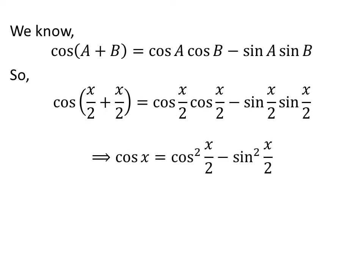Half of x plus half of x is equal to x, so cosine of x is equal to the square of cosine of half of x minus the square of sine of half of x.